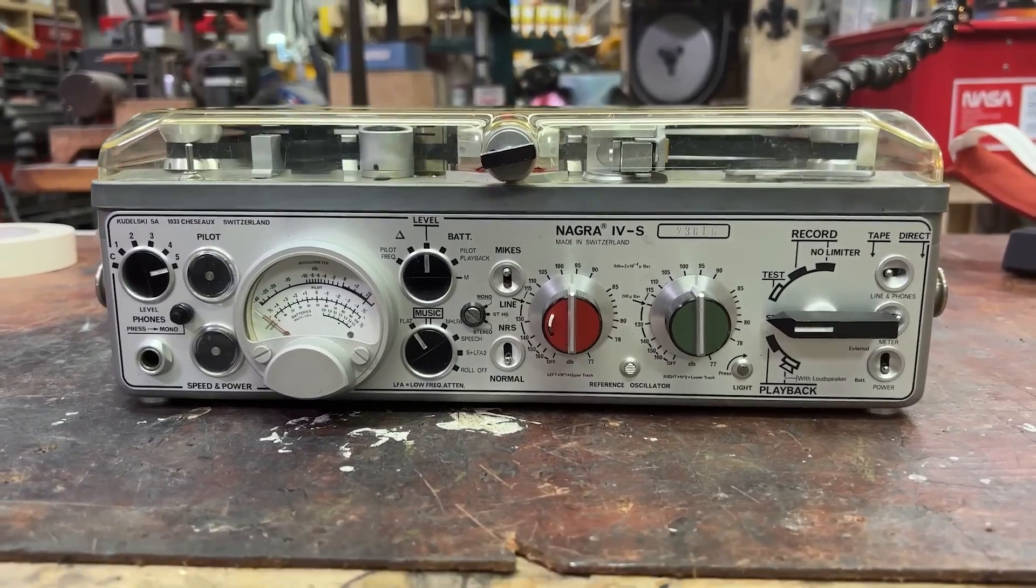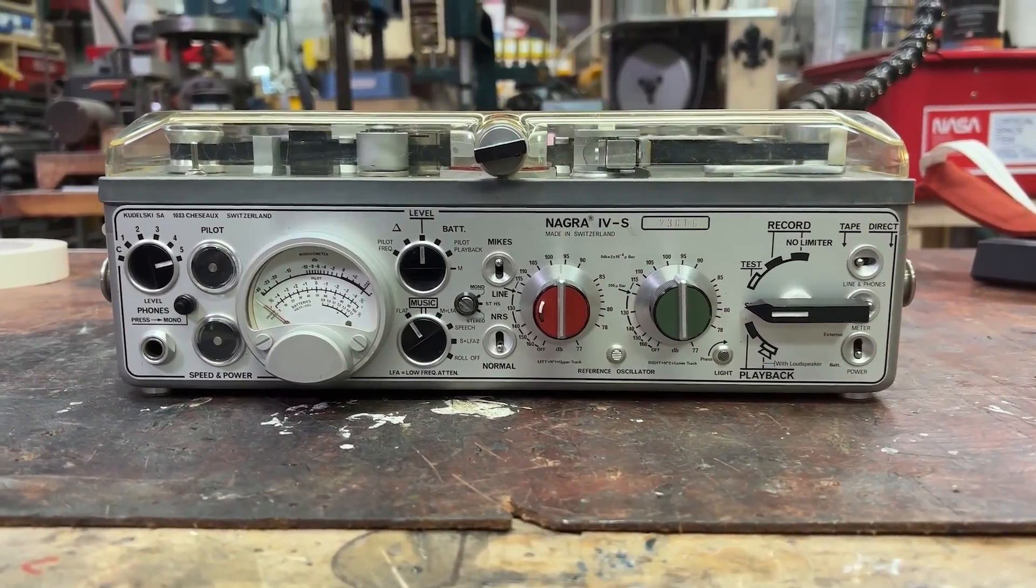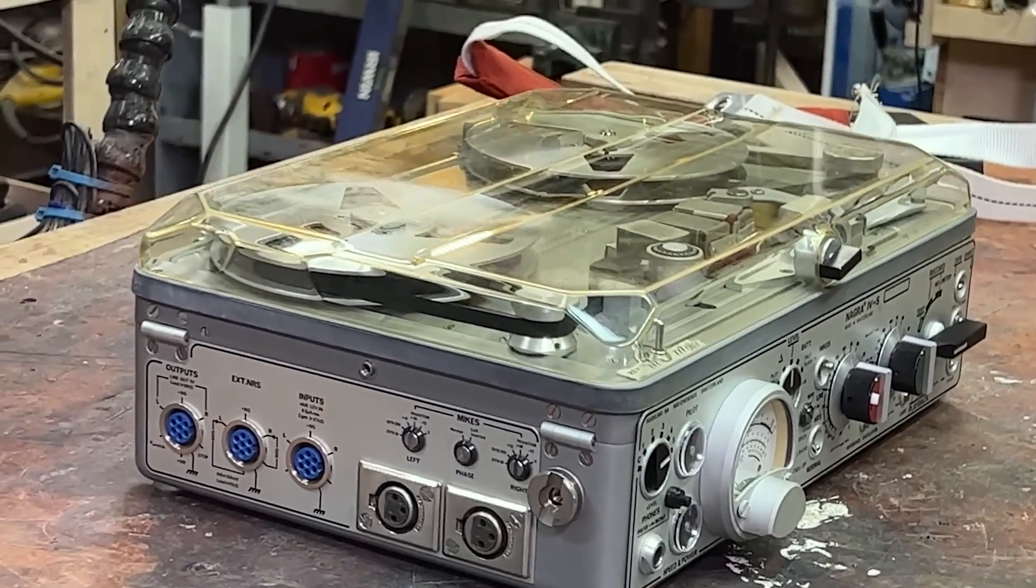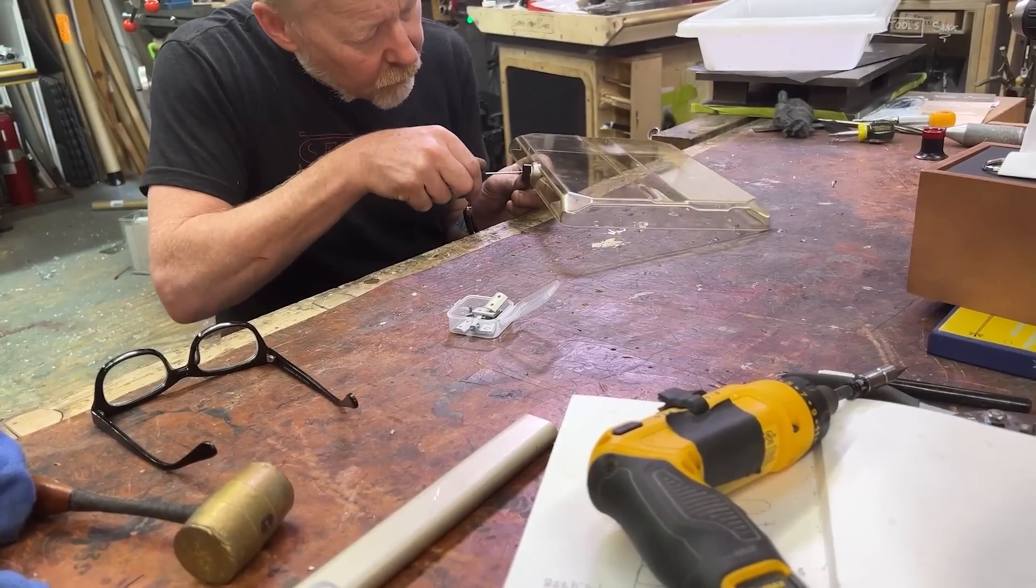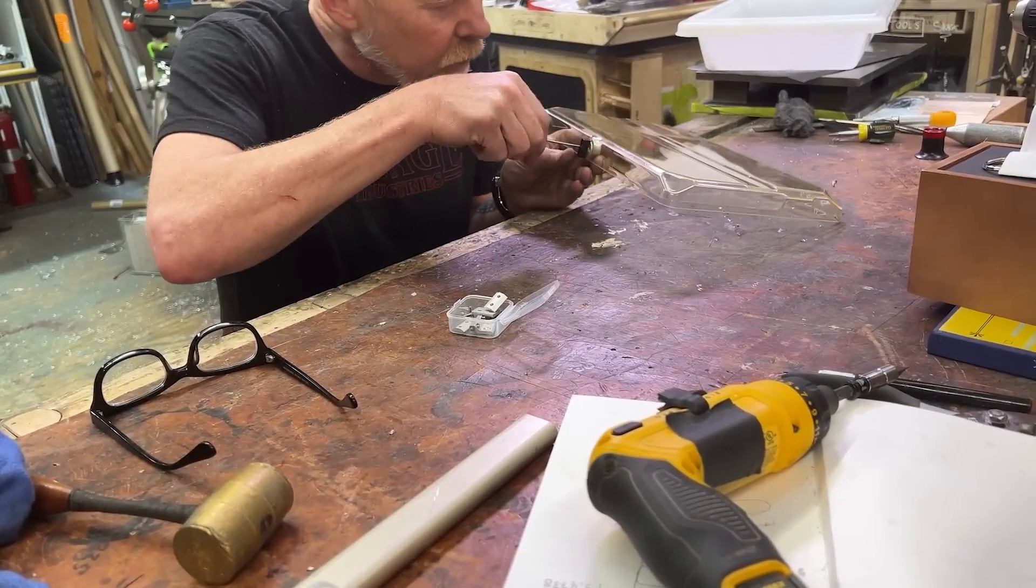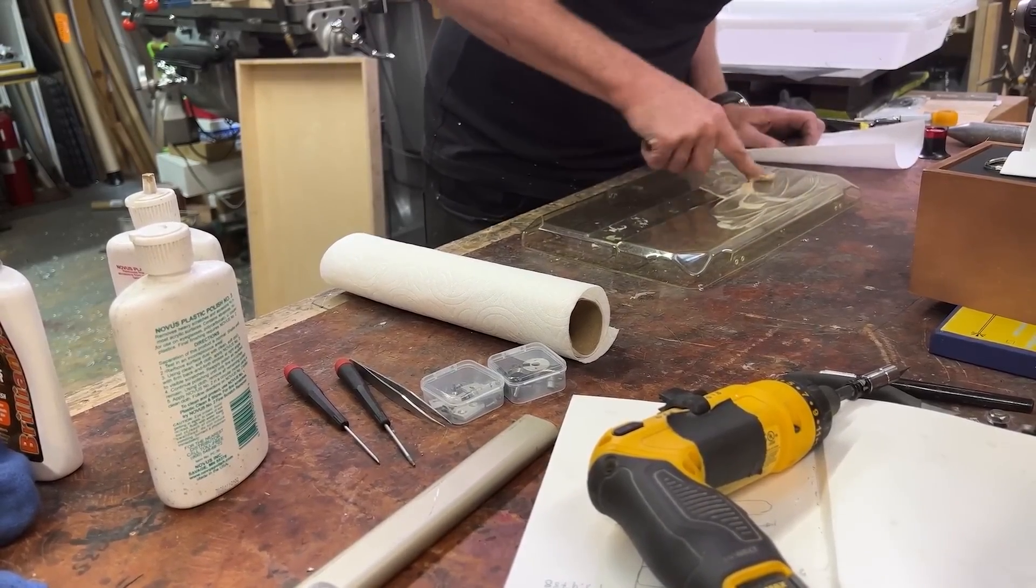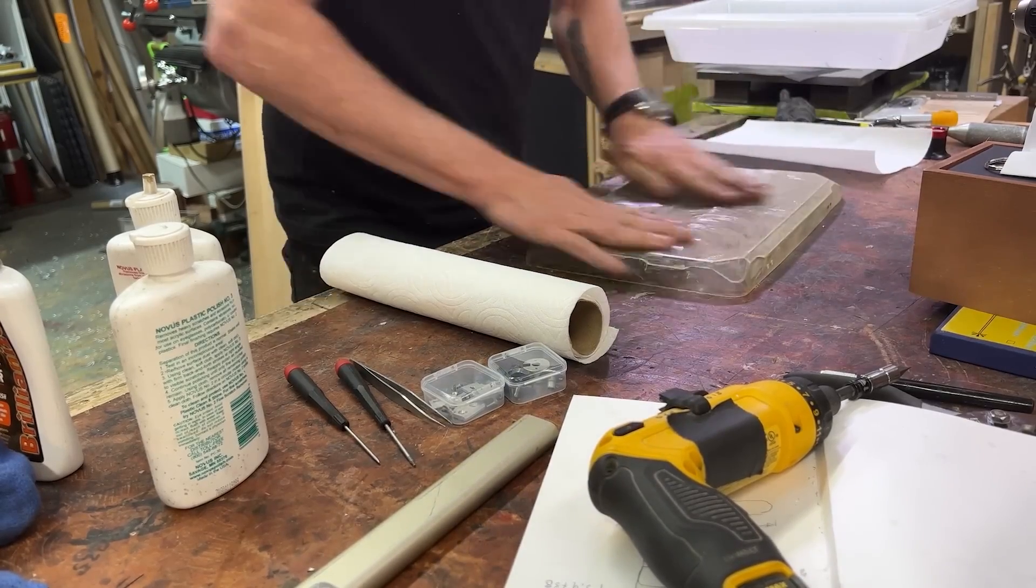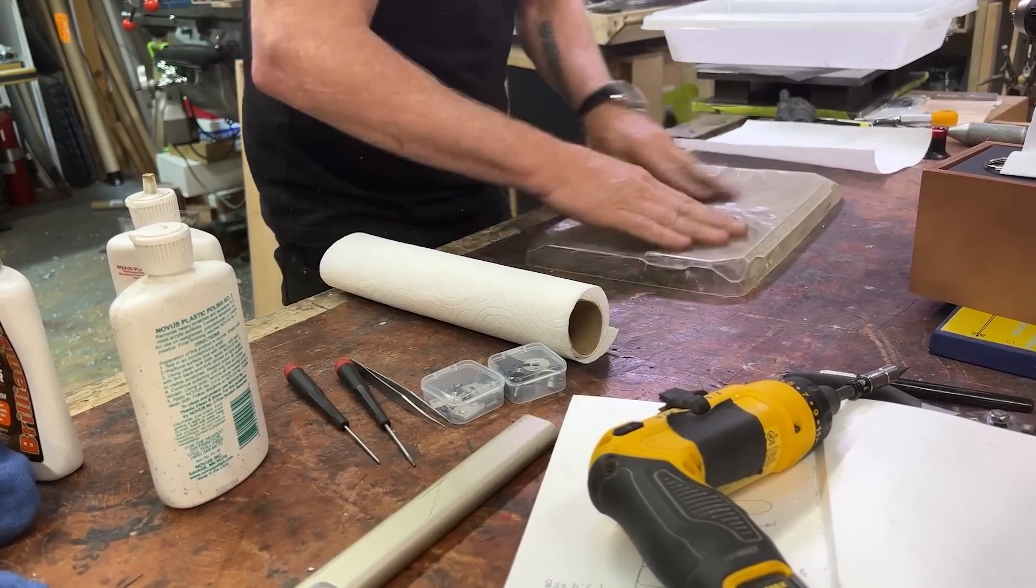Adam Savage is in the process of restoring a Niagara 4S audio recorder. Part of the restoration involves rejuvenating the plastic lid, which has gotten a little cloudy and yellowed with age. First step is to knock down the cloudiness with some plastic polish, which he just works over all of the surfaces by hand, like literally with his fingers.